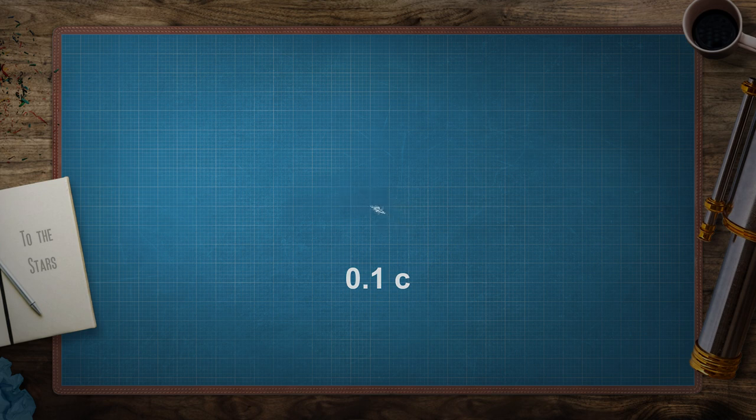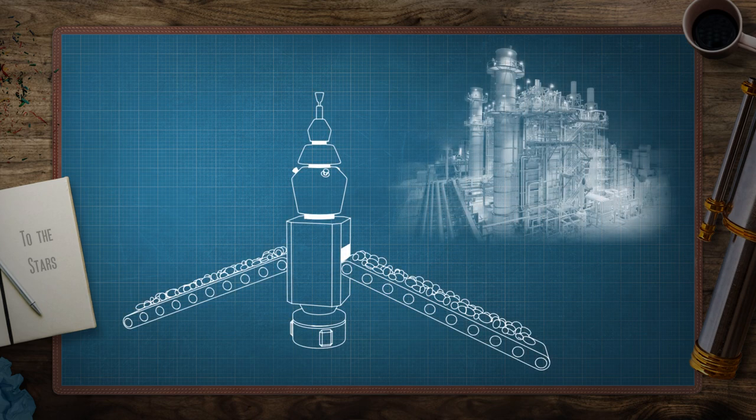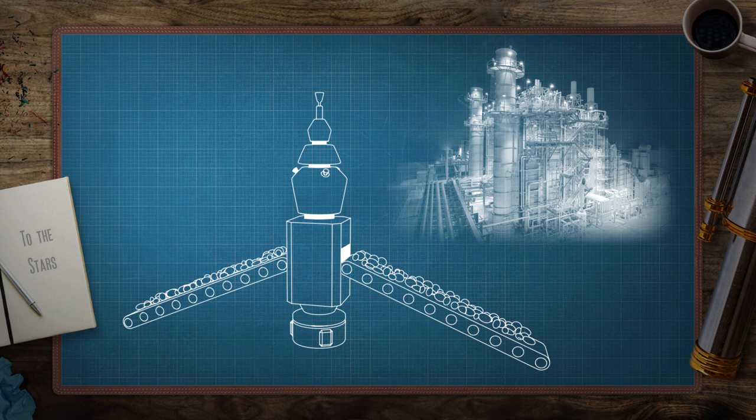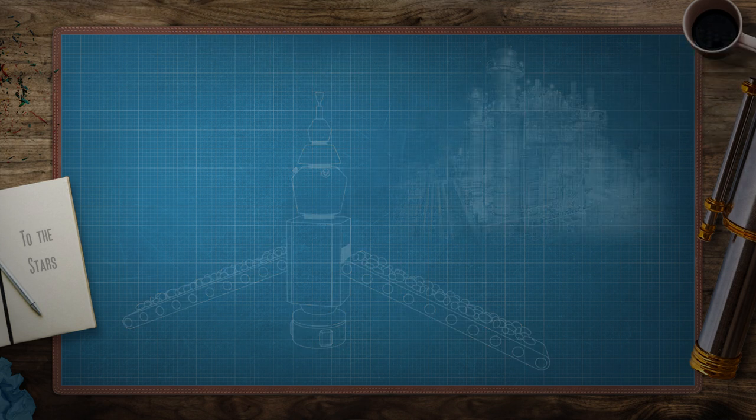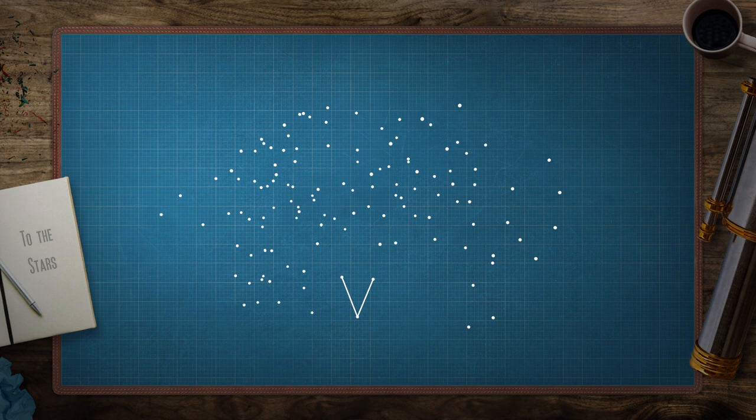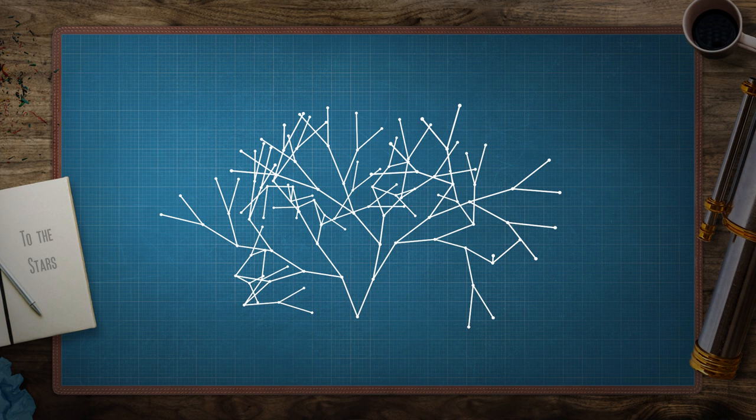And on arrival it gathers natural resources and builds a factory. This factory produces two other probes identical to the original, which are heading to two other star systems. In the first generation we have 2, then 4, then 8, then 16, then 32, then 64. It is an exponential increase.